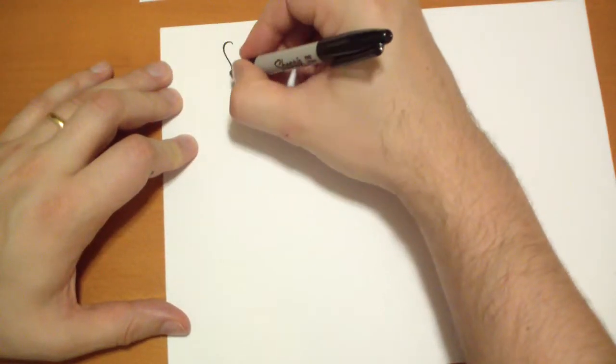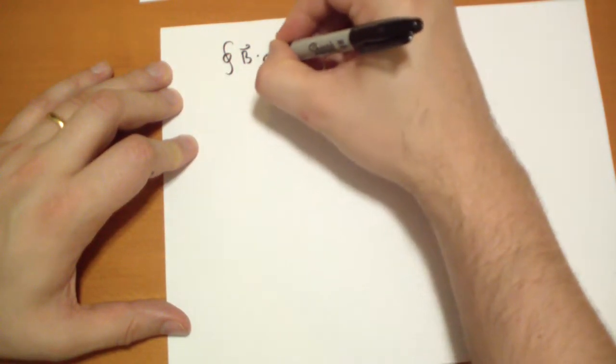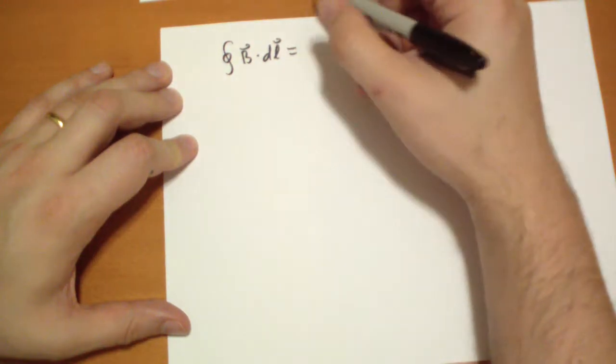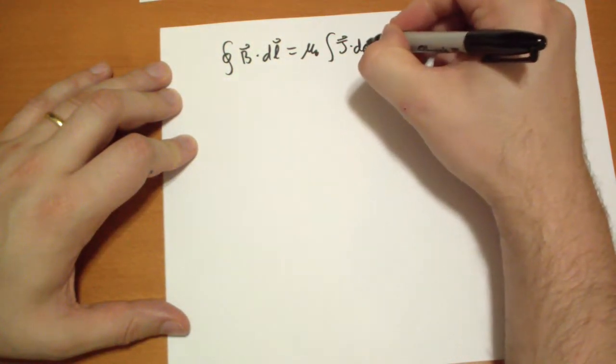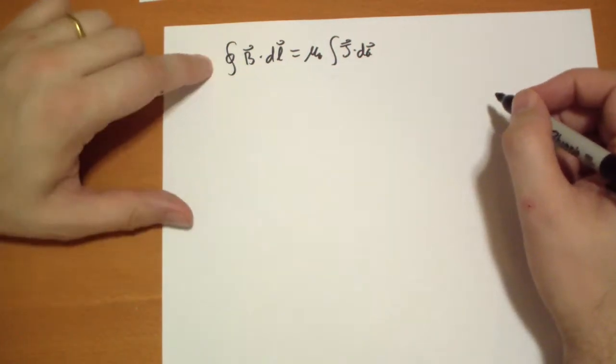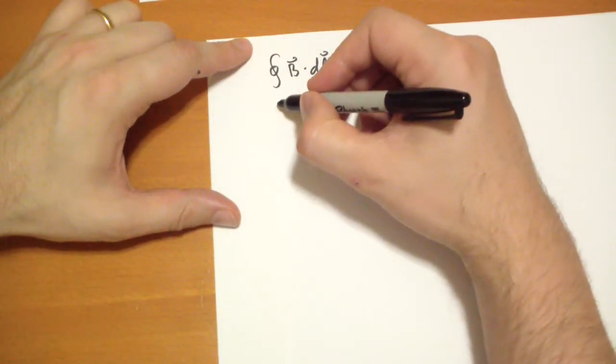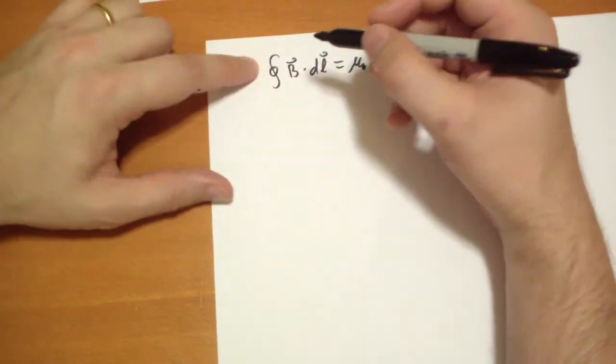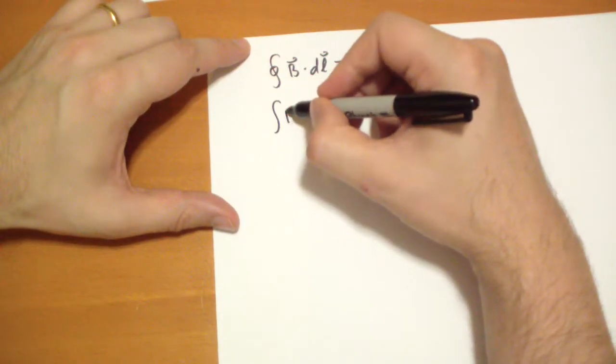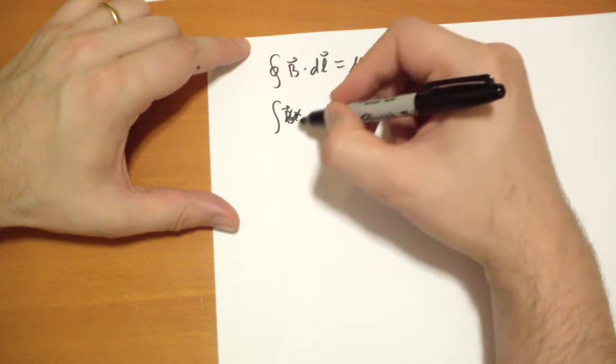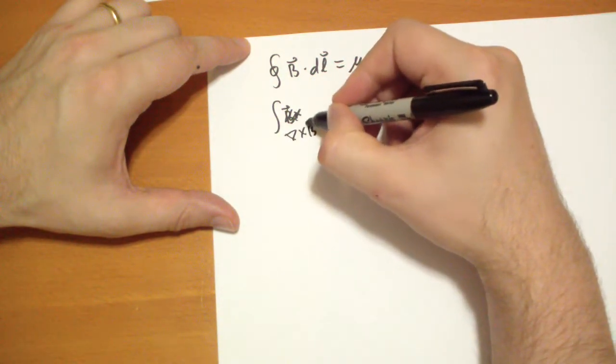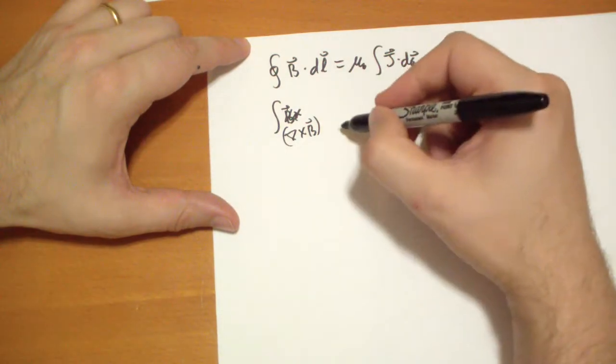So now we have the closed integral B vector dot DL vector is equal to μ₀ the integral of J vector dot dA vector. Well, let's apply Stokes' theorem to this left side. That says that this integral is the same as this integral. The curl of B dot dA.